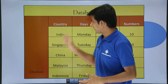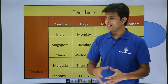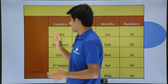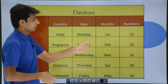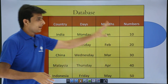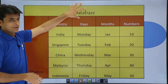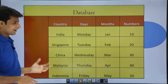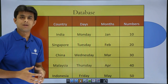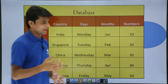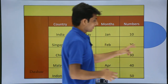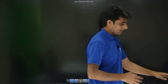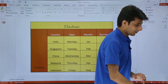I have some data on the screen — that is the database. The name is given as country, and that is days, month, number, and I have written 'database' on the top and 'database' on the left hand side. There is also a picture at the background. So how do I manage and make my table more presentable? Let us see that.